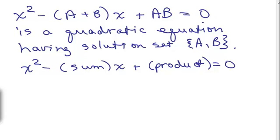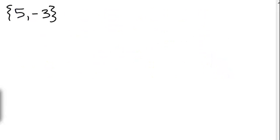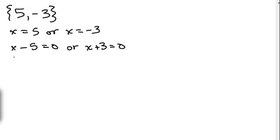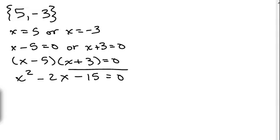So let's see how this works on a particular problem. Let's say you know that 5 and -3 are solutions. This actually is pretty easy doing it the way we've been doing it. You know that that means X equals 5 or X equals -3. So X minus 5 equals 0 or X plus 3 equals 0. You can multiply those two factors, and we get this equation which is going to be X squared minus 2X minus 15 equals 0. So this is an equation having that solution.